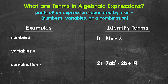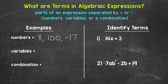In order to better understand terms, let's start by looking at some examples. Numbers can be terms, so some examples would be 8, 100, or negative 17. When we just have a number as a term, we call these constants or constant terms, because their value doesn't change — it remains constant.